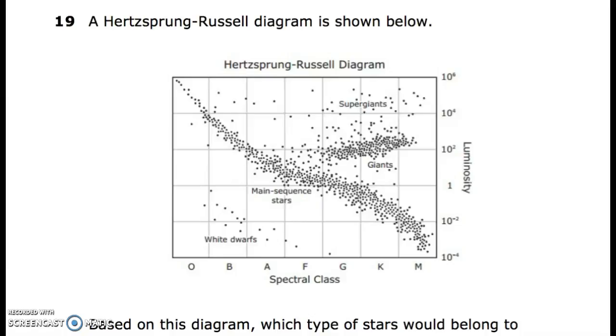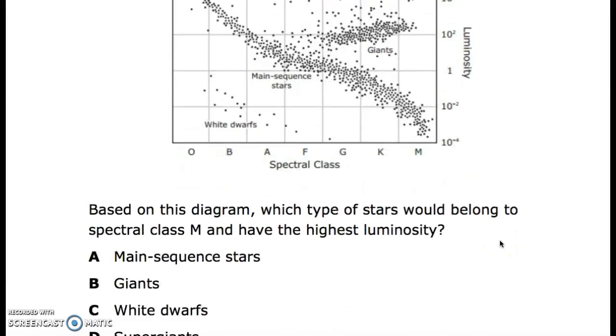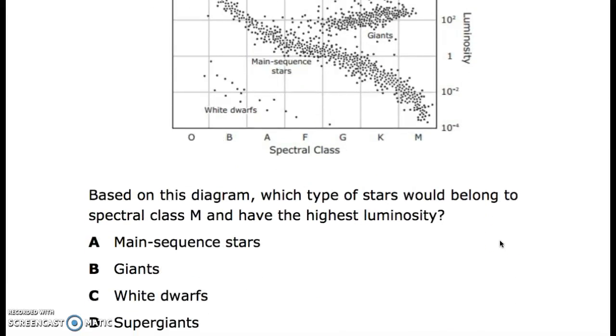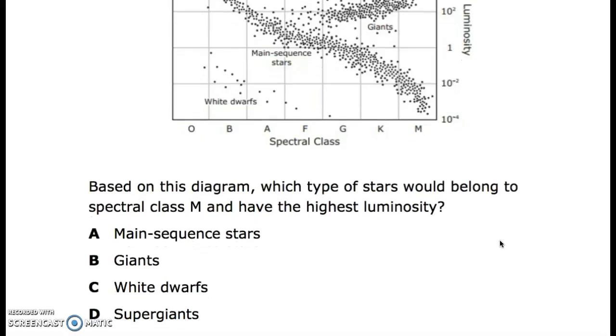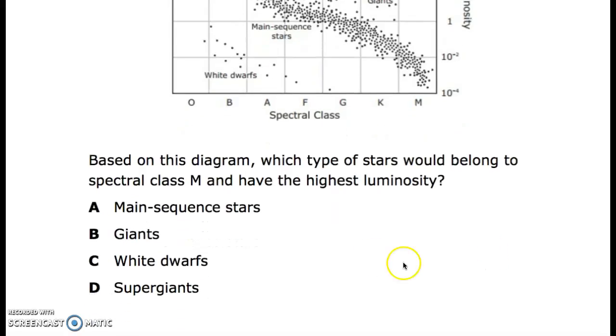A Hertzsprung-Russell diagram is shown below. This is the luminosity, remember it gets brighter here, and the spectral class. Based on this diagram, what type of stars would belong to spectral class M and have the highest luminosity? A. main sequence stars, B. giants, C. white dwarfs, D. supergiants.